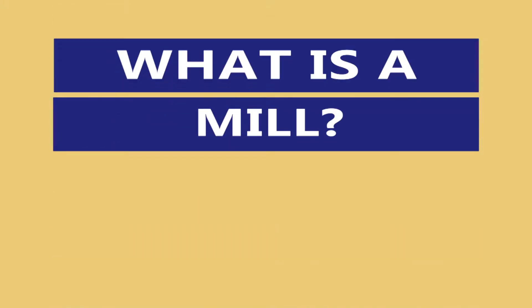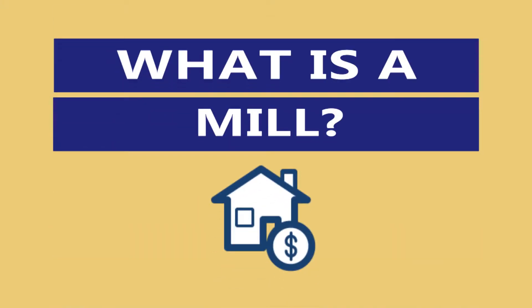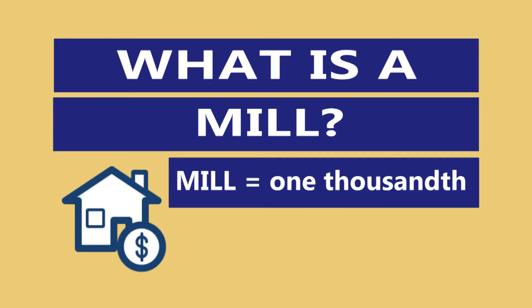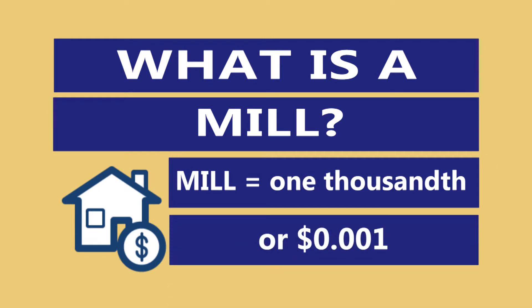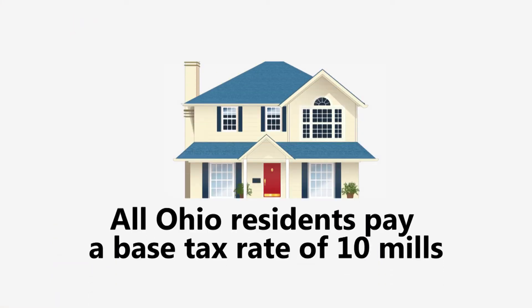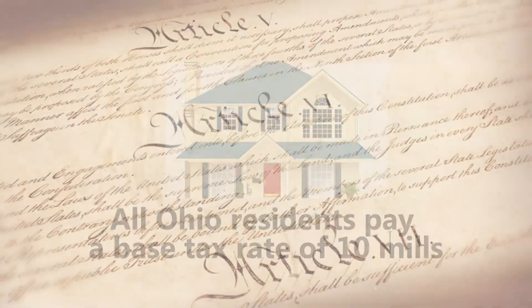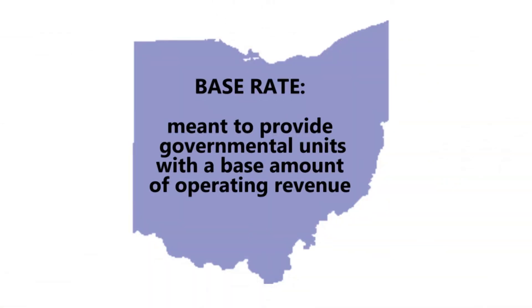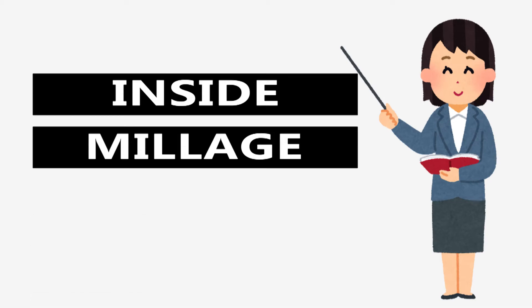What is a mill? Property taxes are charged as mills. One mill is one thousandth of a dollar — that's one tenth of a cent. All Ohio residents pay a base tax rate of 10 mills. This base rate comes from the Ohio Constitution and is meant to provide governmental units with a base amount of operating revenue. These 10 mills are sometimes called inside millage.